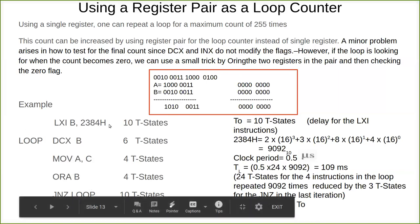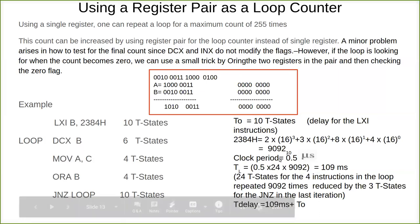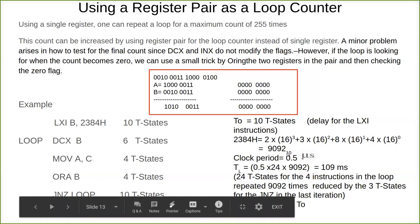So till that it has to count. 2384H, the equivalent value of 2384 in decimal is 9092. So 9092 times this loop will get executed. First it will be decrementing, then it moves to accumulator, ORA, and then jump on zero loop. When it becomes 0, it comes out of the loop.